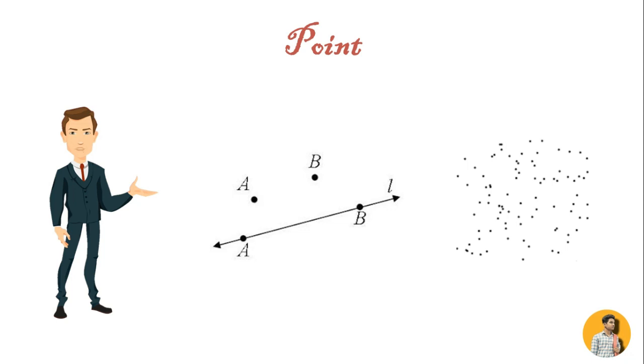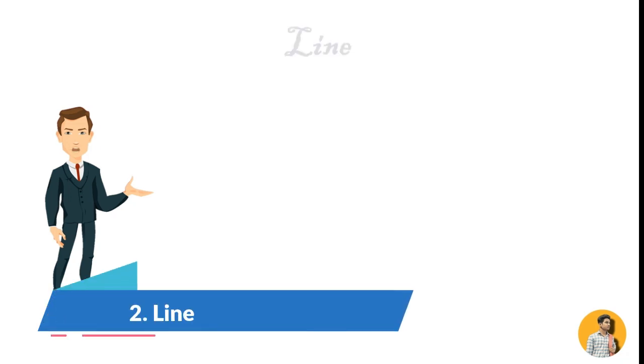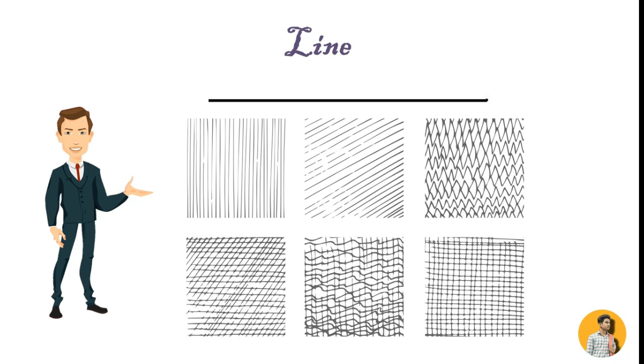Second is line. A point when extended becomes a line. A line has length but no width or depth. It represents a point in motion with explicit direction, movement, and growth.